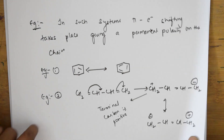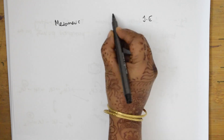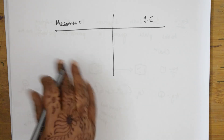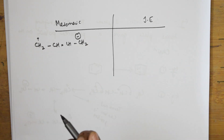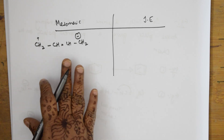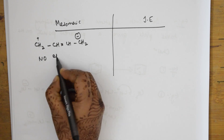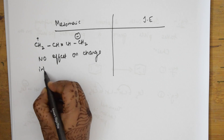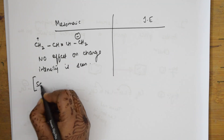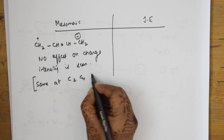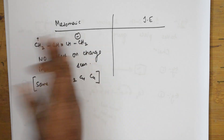Now, what is the difference between mesomeric effect and inductive effect? In mesomeric effect, as seen in the 1,3-butadiene example with 4 carbons C1 through C4, there is no effect on charge intensity — whether the electrons shift in one direction or the other, the charge intensity at the terminal carbons remains the same. It is simply a transfer; there is no decrease in charge intensity.